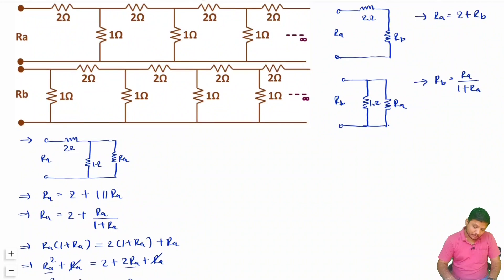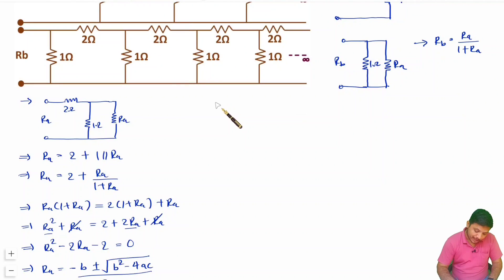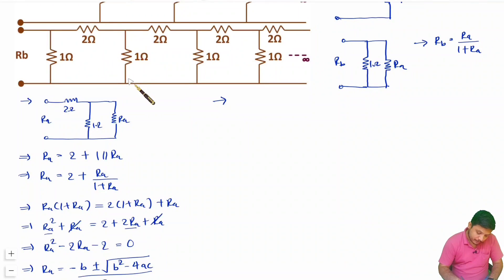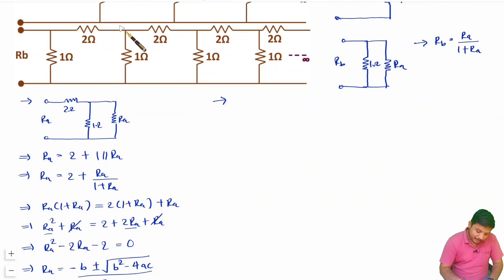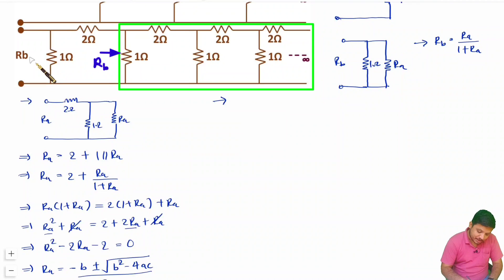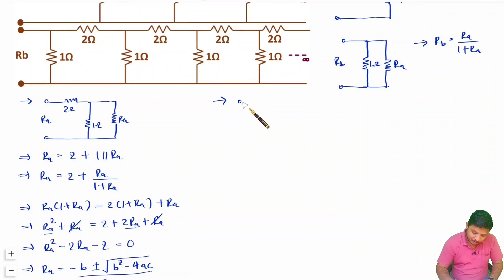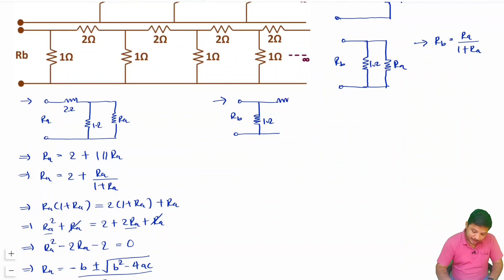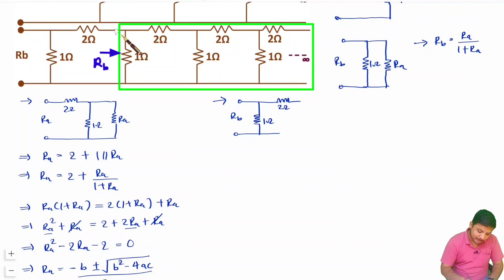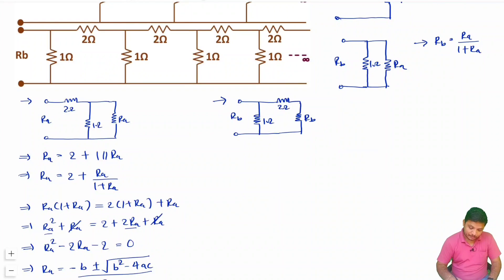Now let me explain how to find the value of RB. For RB, this circuit is repeating from a certain point onwards. So I connect that portion as RB and form an equation. I have a 1 ohm resistor, then RB in the circuit, then a 2 ohm resistor, and from there it repeats — so that equivalent is also RB. Therefore RB equals 1 in parallel with the series combination of 2 and RB.